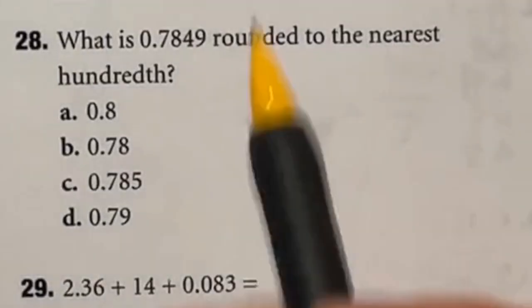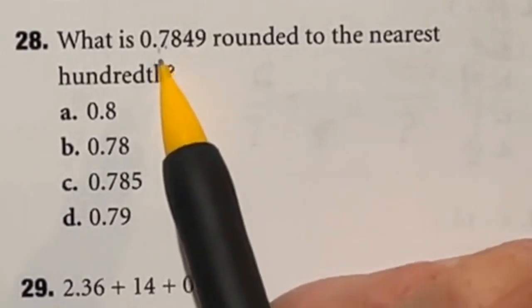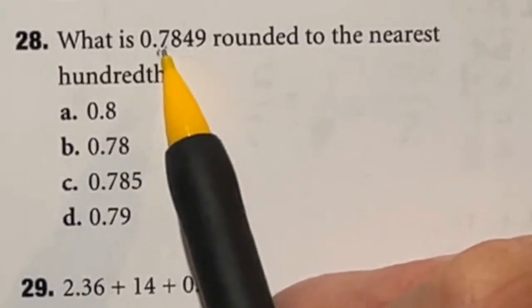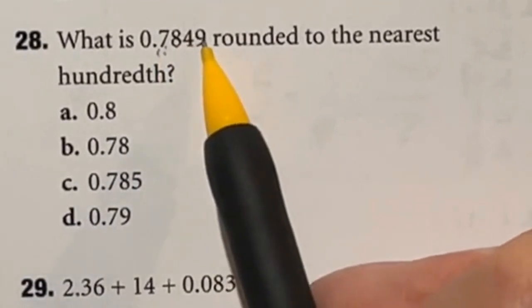So 28 is just a rounding question, so you have to know what each of the places are named after the decimal point. Well, let's go through them. The first one at the decimal is the tenths, then the hundredths, then the thousandths, and then the ten thousandths.